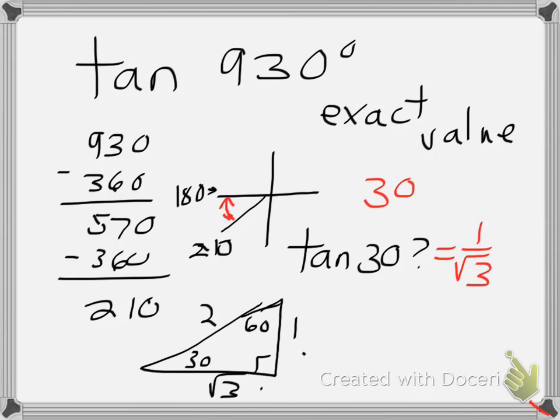Now we want to rationalize that. So we'll multiply square root of 3, square root of 3, and we'll end up with square root of 3 over 3.